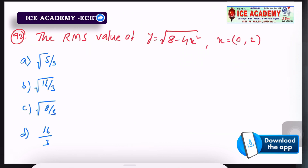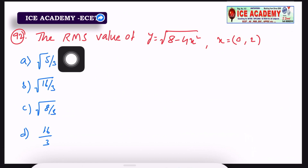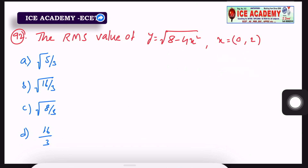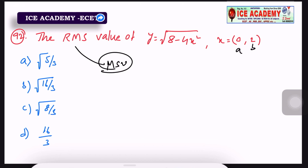Next question: Find the RMS (root mean square) value of y = √(8 − 4x²), with limits 0 to 2 (a = 0, b = 2). We first find the mean square value, then take the square root to get the RMS value.